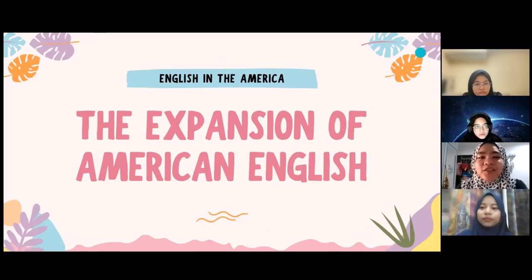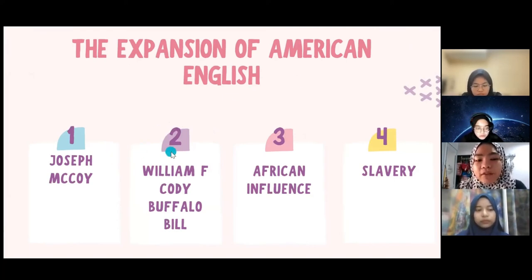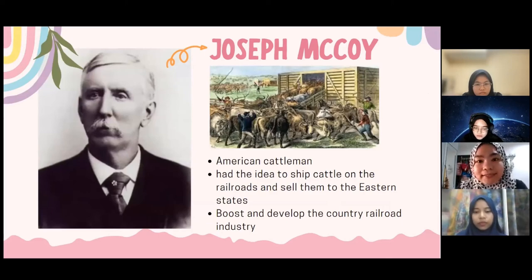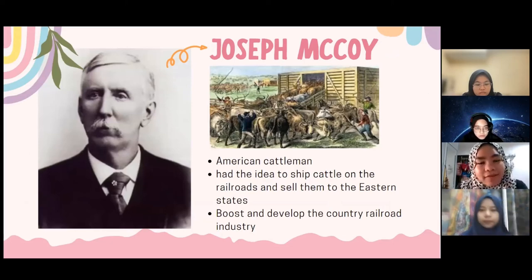Moving on to the expansion of American English. The expansion of American English consists of the story about Joseph McCoy, William F. Cody (Buffalo Bill), African influence and slavery. Joseph McCoy is one of the famous American cattlemen. He had the idea to ship cattle on the railroad and sell them to the eastern states. Travellers would sometimes introduce themselves with his name, and in turn he began to introduce himself as the real McCoy.